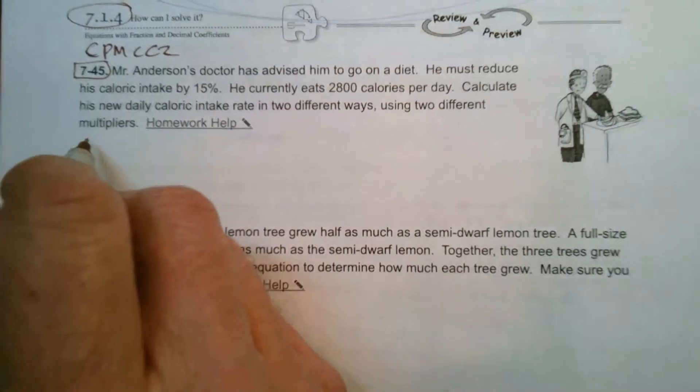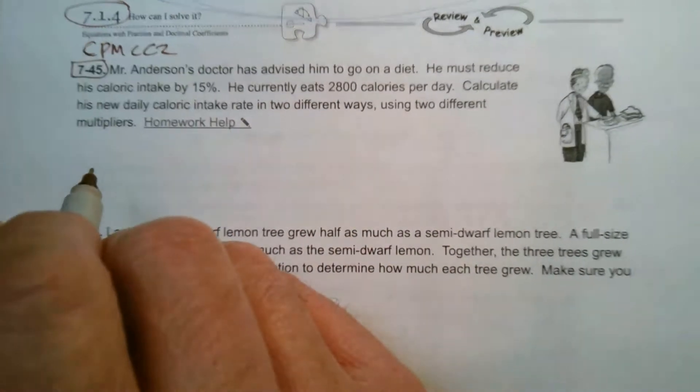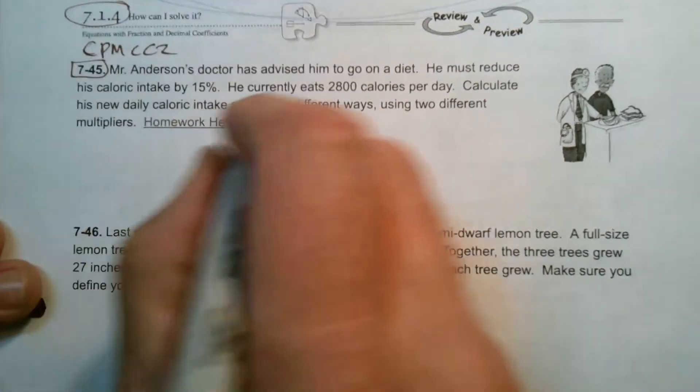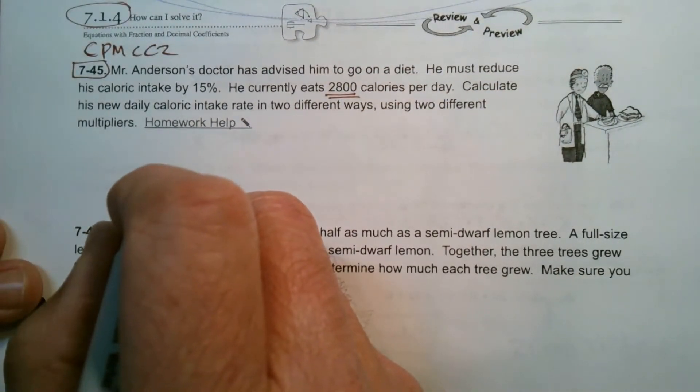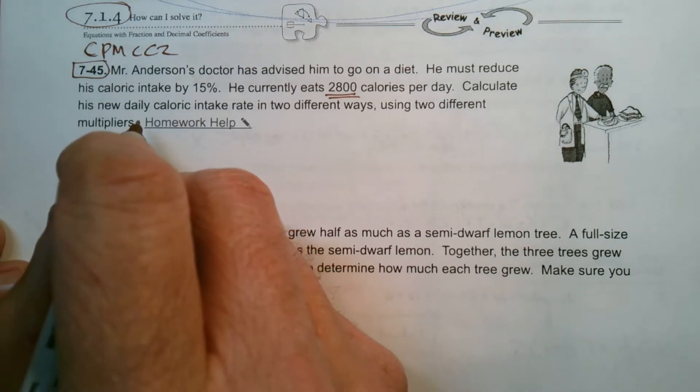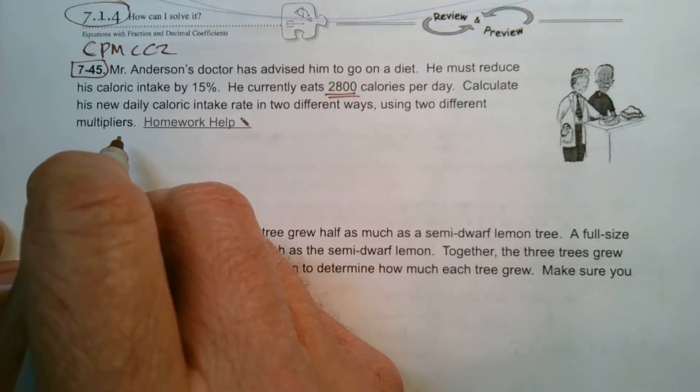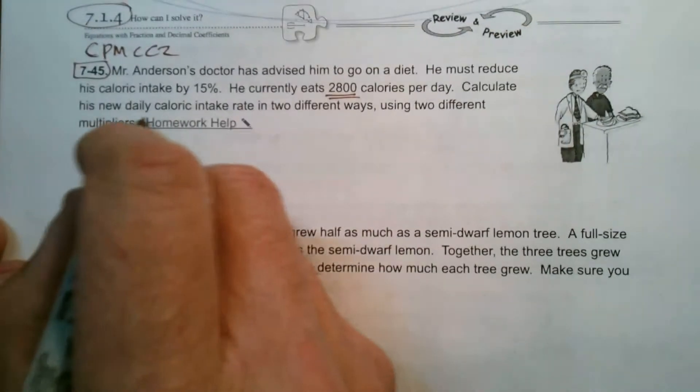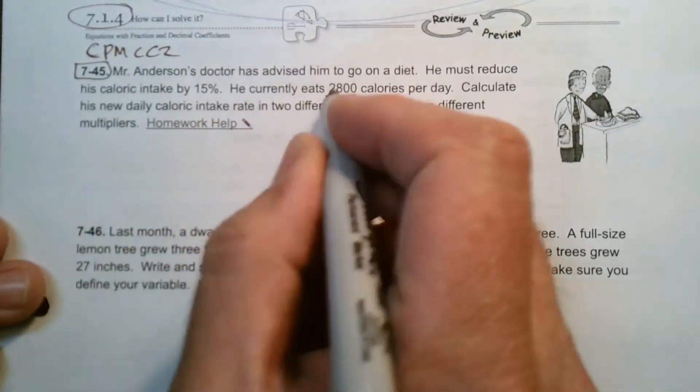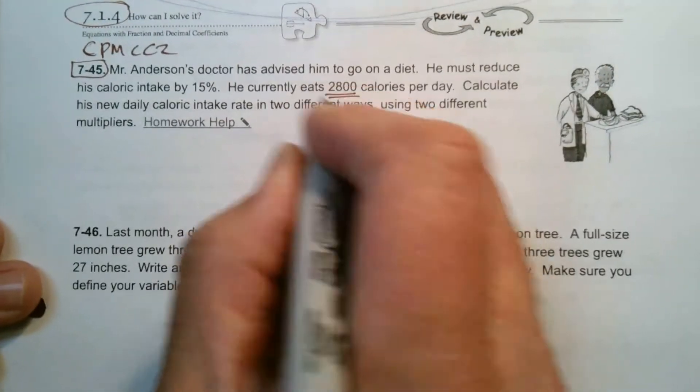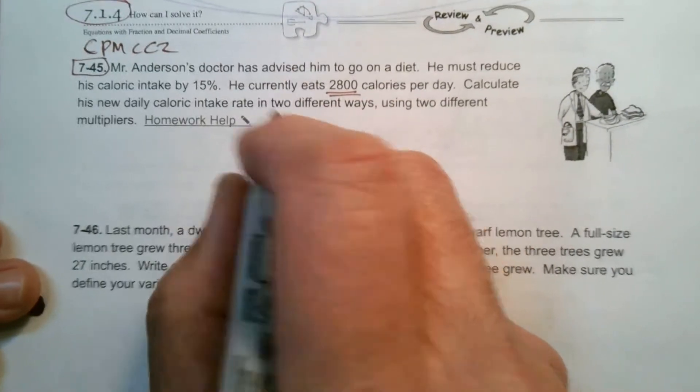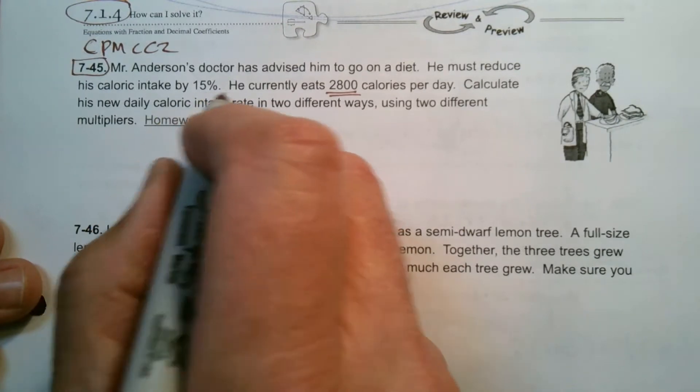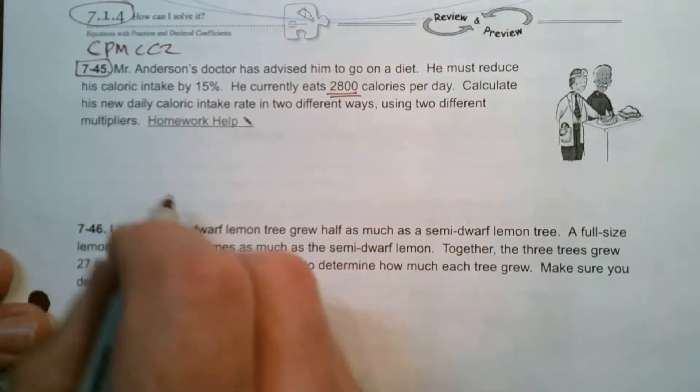Use two different multipliers. I know he's consuming 2,800 calories per day, but we want to know what he needs to have his new intake, his new rate per day, how many calories per day. And he needs to reduce it by 15%.